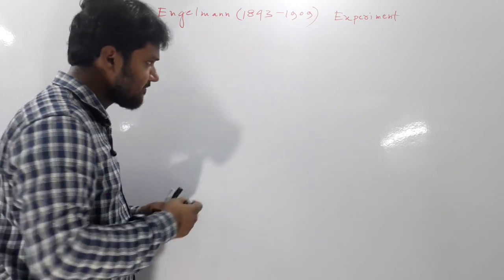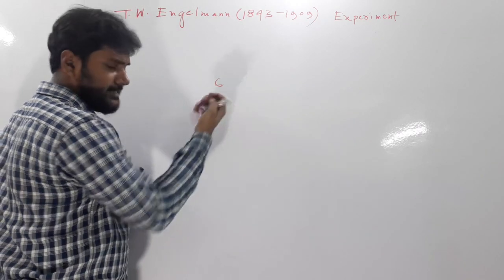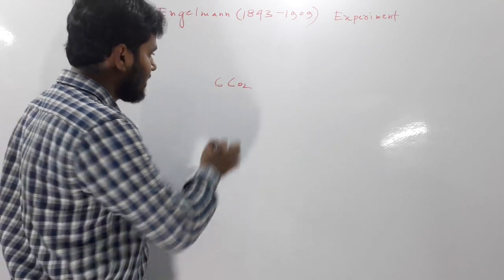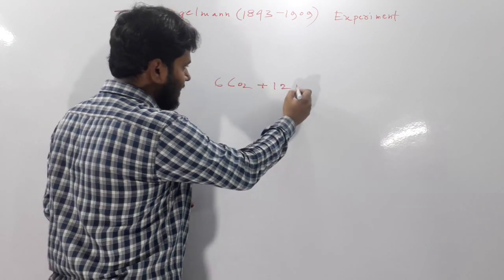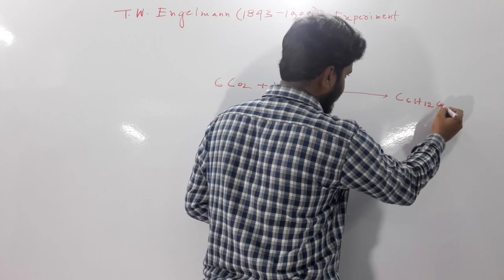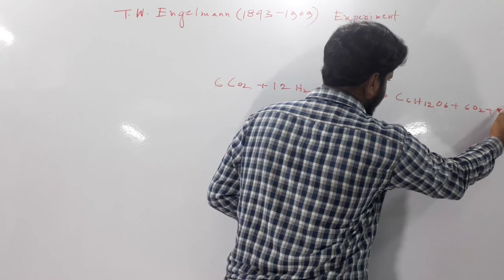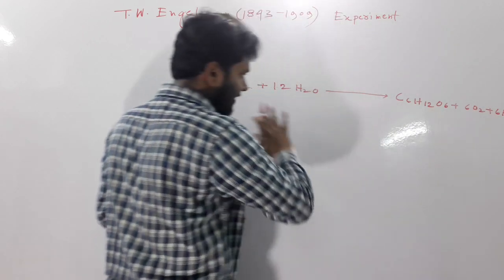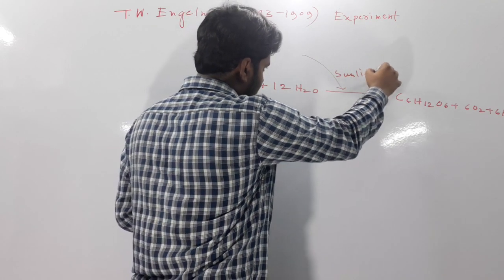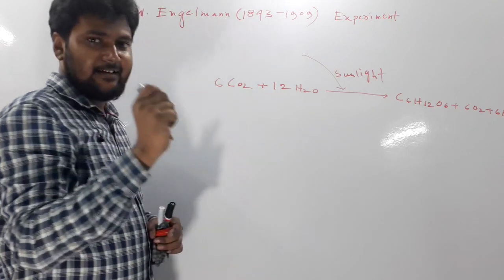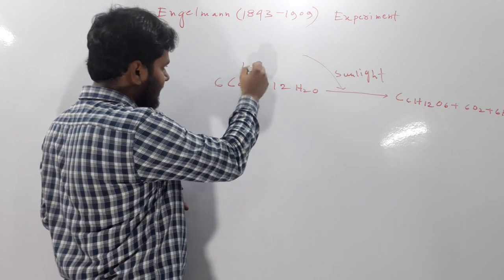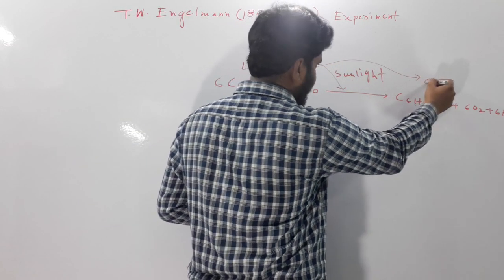Before that we have to clear some other concepts. You all know what is the basic equation of photosynthesis and what are the basic elements which are essential for photosynthesis to occur. It is six molecules of CO2 and 12H2O. The end product will be glucose, oxygen and water. This whole procedure is done under light, and light energy is transformed into chemical energy.